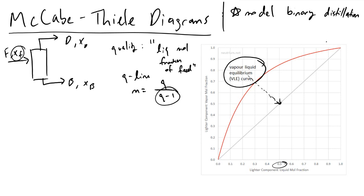Typically, especially in exam settings, your feed will be a mix of vapor and liquid, giving a Q line with roughly a 45-degree angle. Our Q line has the point (0.5, 0.5) from our X sub F value. Since our feed is a 50-50 mix of vapor and liquid, the slope is minus 1, making a 45-degree angle.